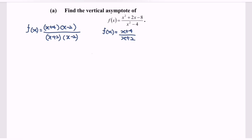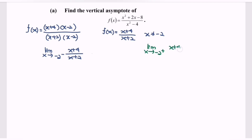Observe that x cannot be equal to -2. We evaluate the limit as x approaches -2 from the left, and the limit as x approaches -2 from the right, for the function (x + 4) / (x + 2). The suggested value from the left will be x = -2.0001, and from the right, x = -1.9999.